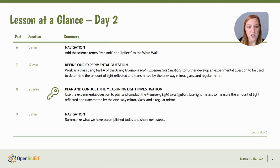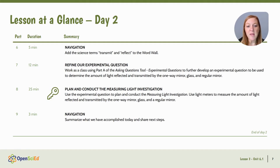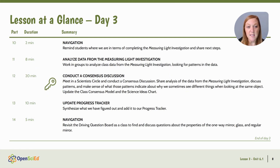On day two, we're going to add the science terms transmit and reflect to our word wall — they were introduced in day one, and we earn them in day two. We'll refine our experimental question to be clear and concise about measuring the amount of light reflected and transmitted, then plan and conduct the measuring light investigation, identifying variables and collecting data. On day three, we'll share our data and look for patterns, conduct a consensus discussion in a scientist circle, update our class consensus model and science ideas charts, update our progress tracker, revisit our driving questions board, and motivate the need to see what the one-way mirror material is made of.